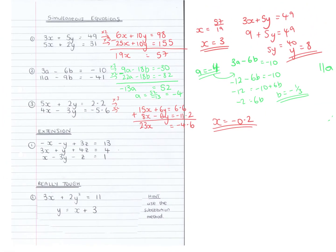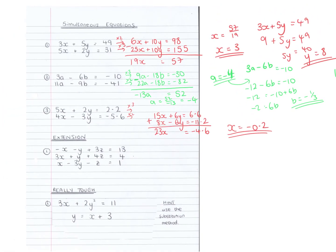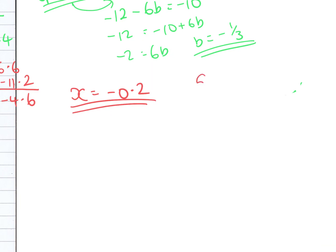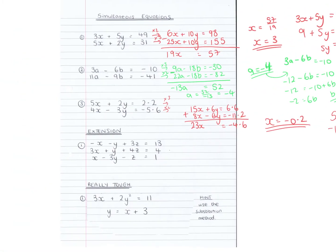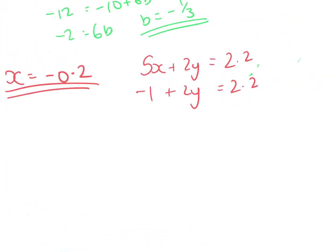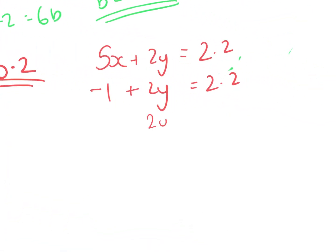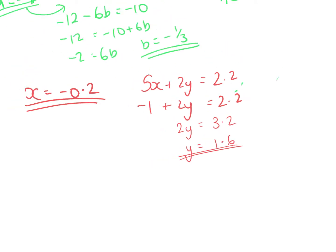And then once you've got x, I know that 5x plus 2y is 2.2. So if x is minus 0.2, 5 of those will be minus 1. Add 1 to both sides, 2y equals 3.2. And then divide by 2, y equals 1.6 for that one.